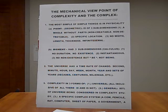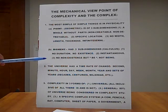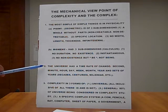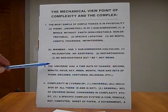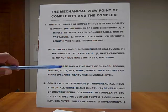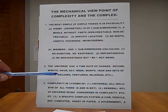We'll go to B, a moment. Has three sub-dimensions. Calculus, number one. No duration, no existence. Number two, instantaneous. Number three, no non-existence but B, not being. Number two, the universe has a time rate of change, such as second minute, hour, day, week, month, year, and sets of years, such as decades, centuries, millennia, etc.